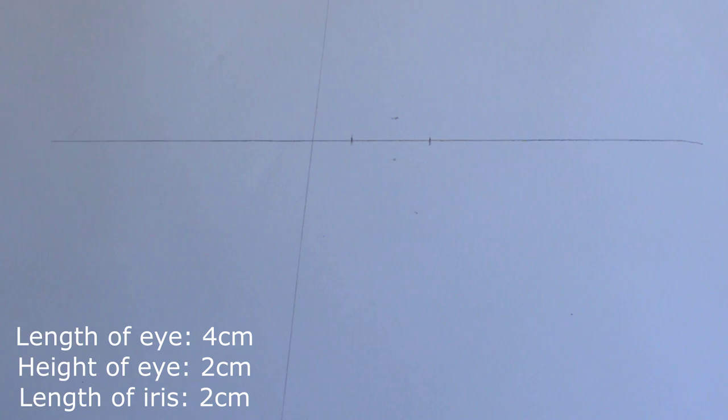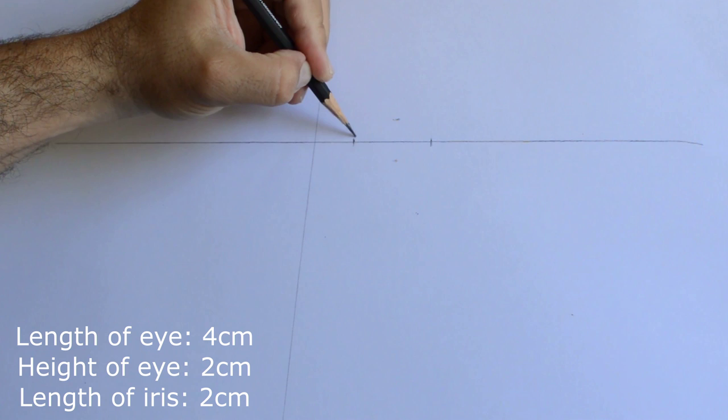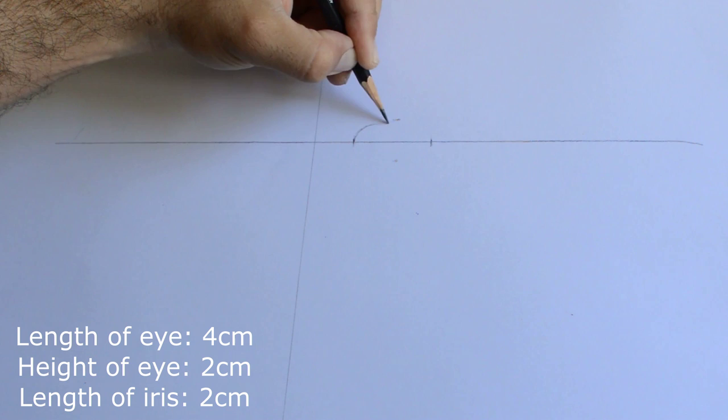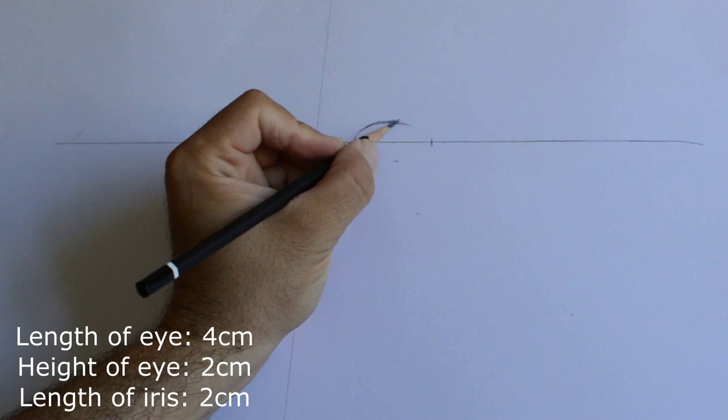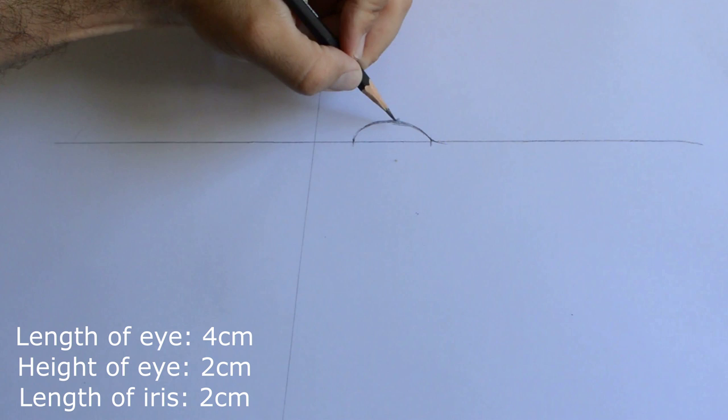Let's say we need to draw an eye that is four centimeters in length. We will measure half of this length, that is two centimeters, to mark the height, the width of the eye.